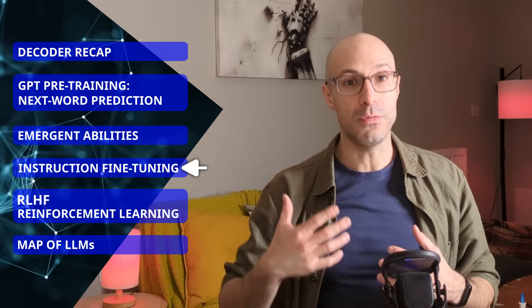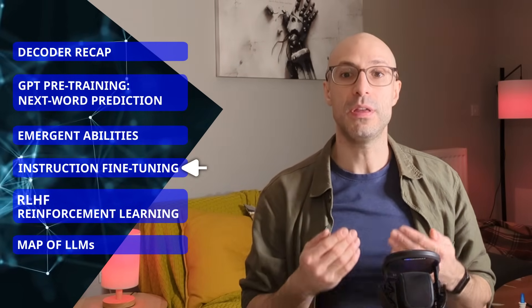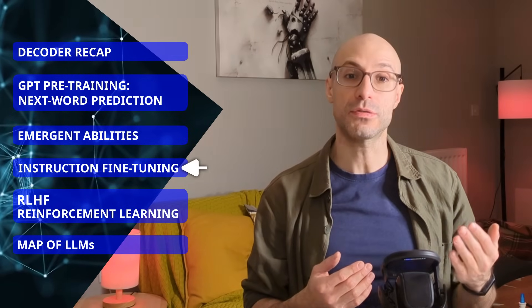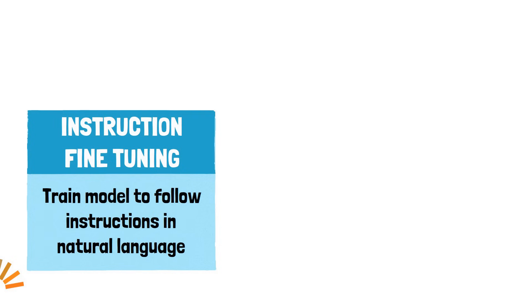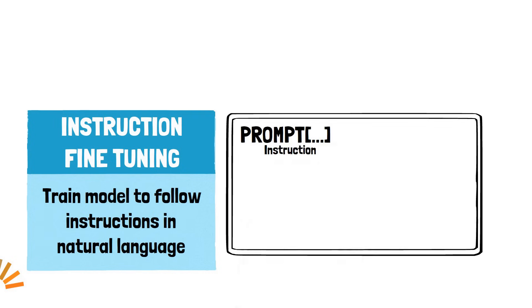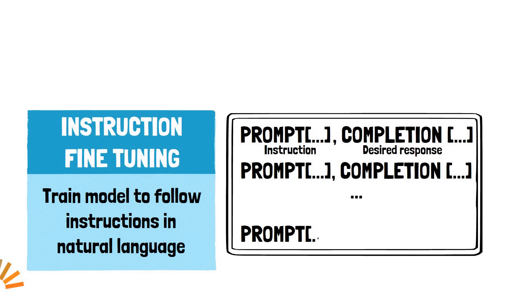GPT models trained on vast amounts of data have an emergent ability that allows them to sometimes perform tasks given as prompts in natural language. However, the models were still far from being reliable at performing tasks. Exploring and building on this potential, OpenAI introduced the concept of instruction fine-tuning with models like InstructGPT. This approach involves fine-tuning a GPT model not on specific downstream tasks, but to follow instructions in natural language. This can be done by creating a dataset of prompts, instructions, and desired completions to teach the model how to understand and execute a wide range of instructions more accurately.